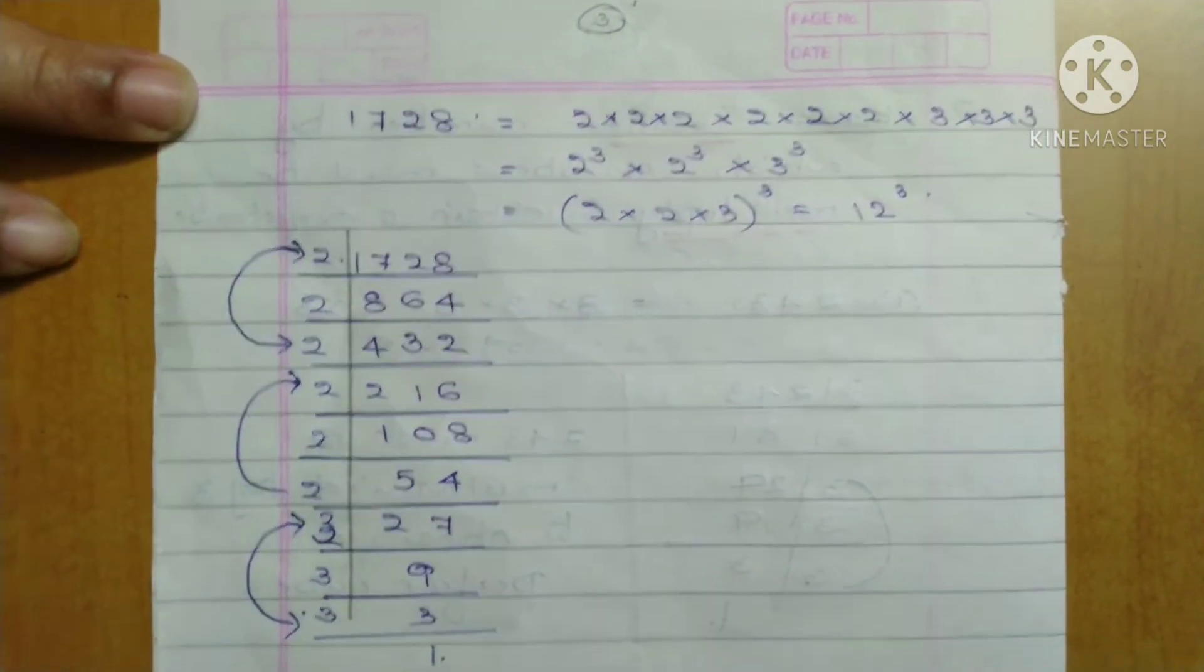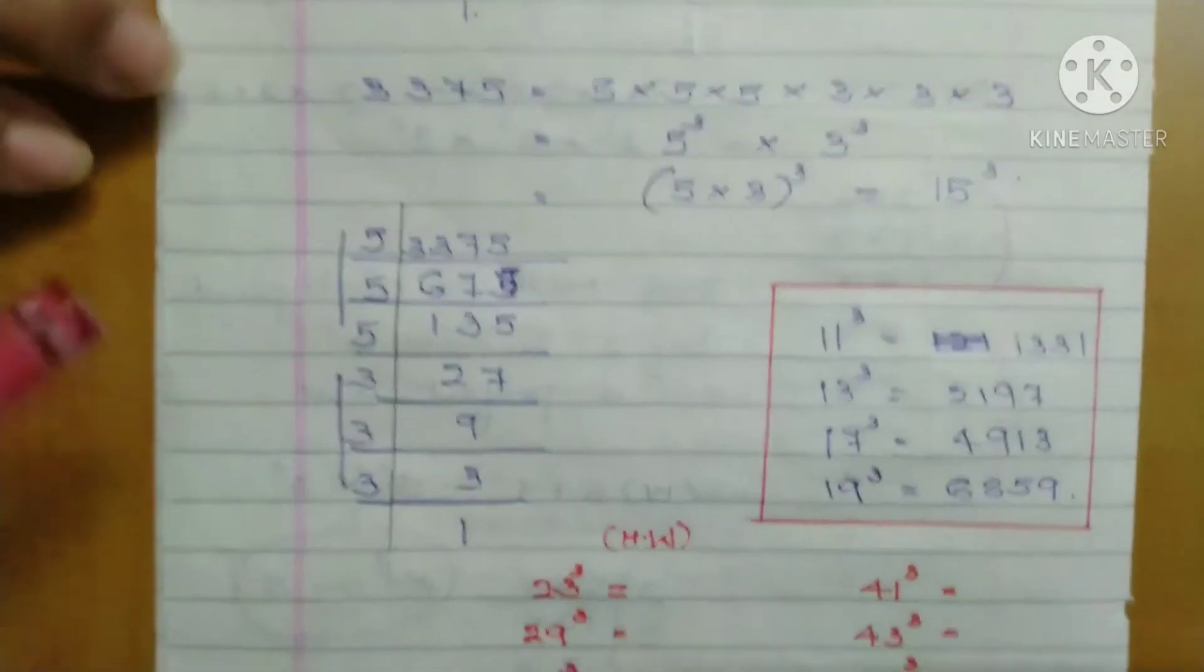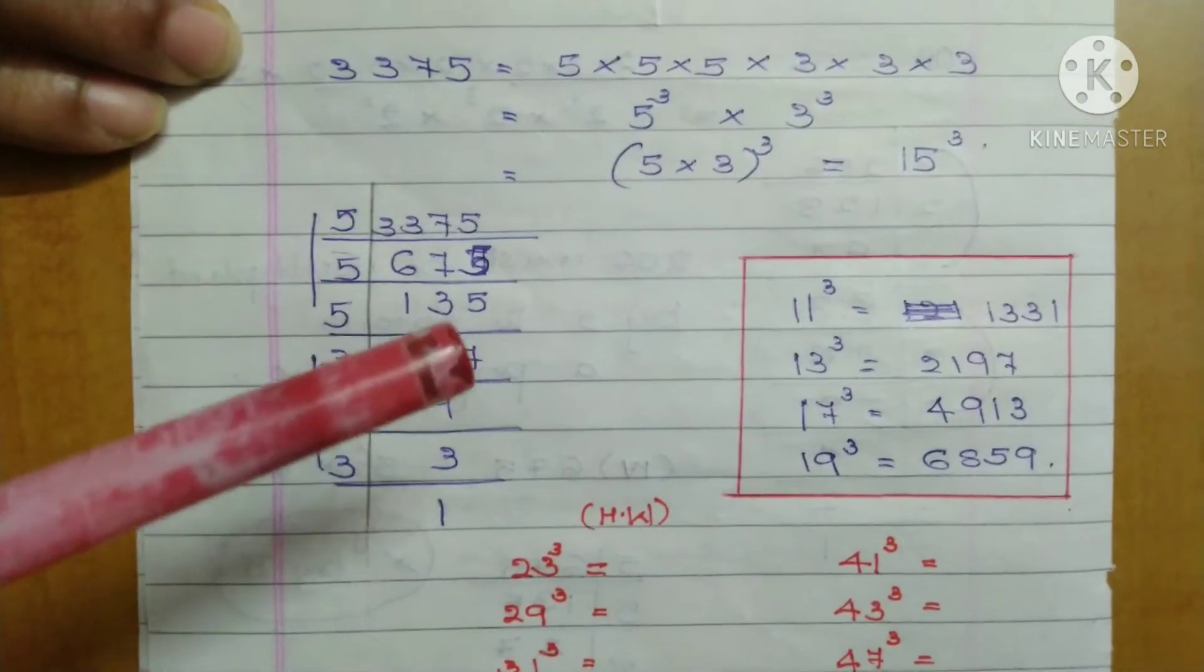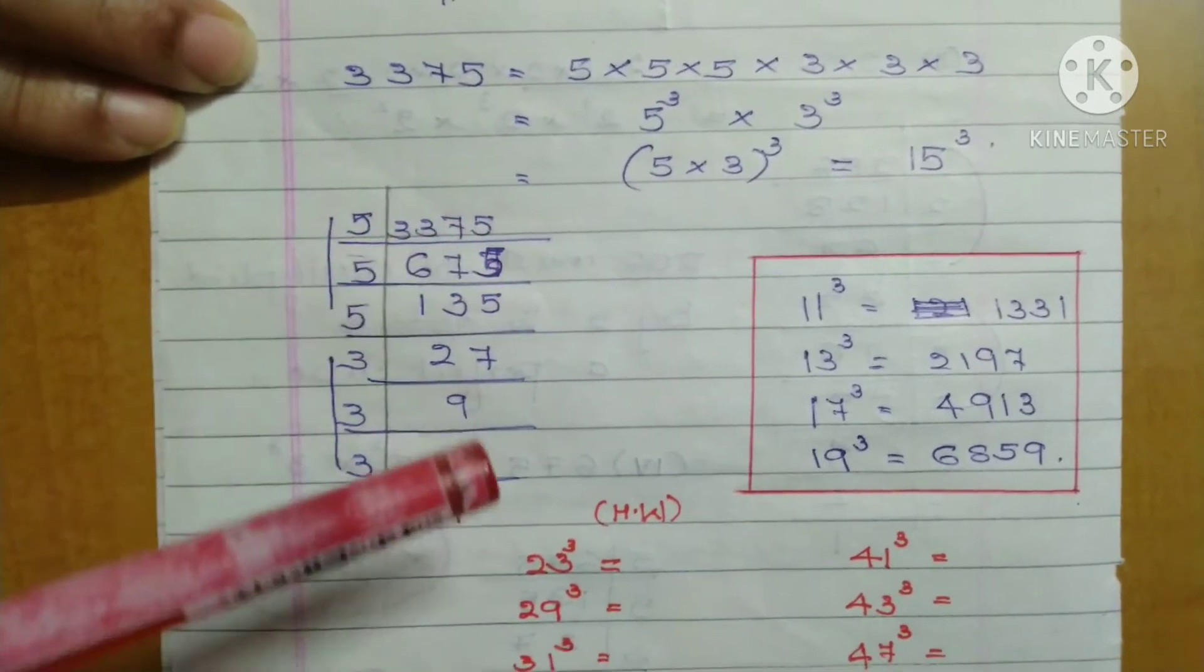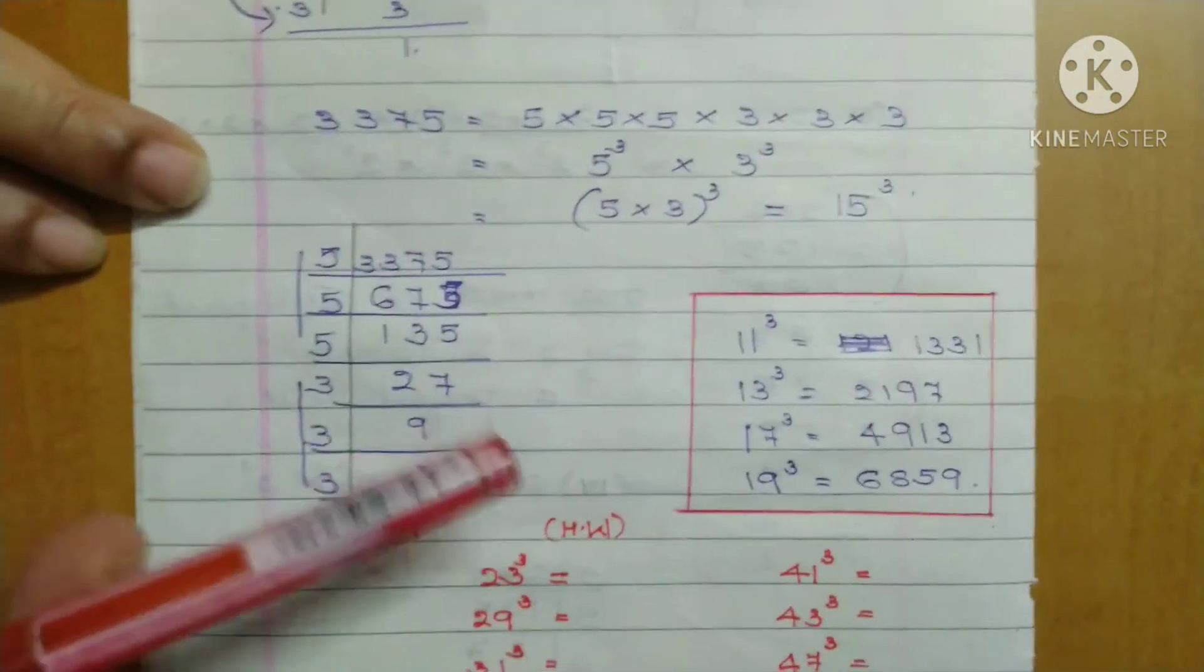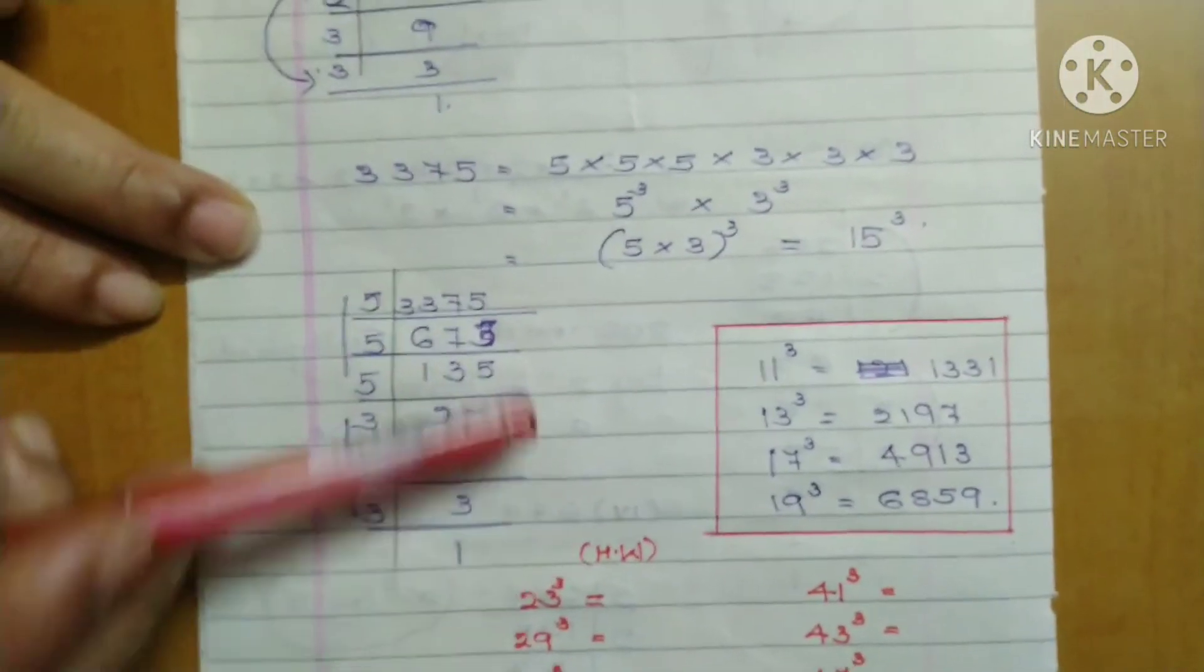12³ equals 1728. Now for the second example, 3375. It ends in 5, so we start by dividing by 5. You can also do by 3, but you cannot divide by 2 because it's an odd number.